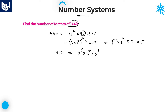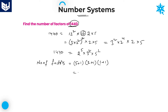This is the first step to calculate number of factors. Now, once this step is done, calculating number of factors is very simple: add 1 to the powers and then multiply each other. Here, the power of the first prime number is 5, so 5 plus 1; into power of the second prime, that is 2, so 2 plus 1; into power of the third prime, 1, so 1 plus 1. Multiply all the values: 6 into 3 into 2 — 6 into 3 is 18, 18 into 2 is 36. Therefore, the number of factors for the number 1440 is equal to 36.